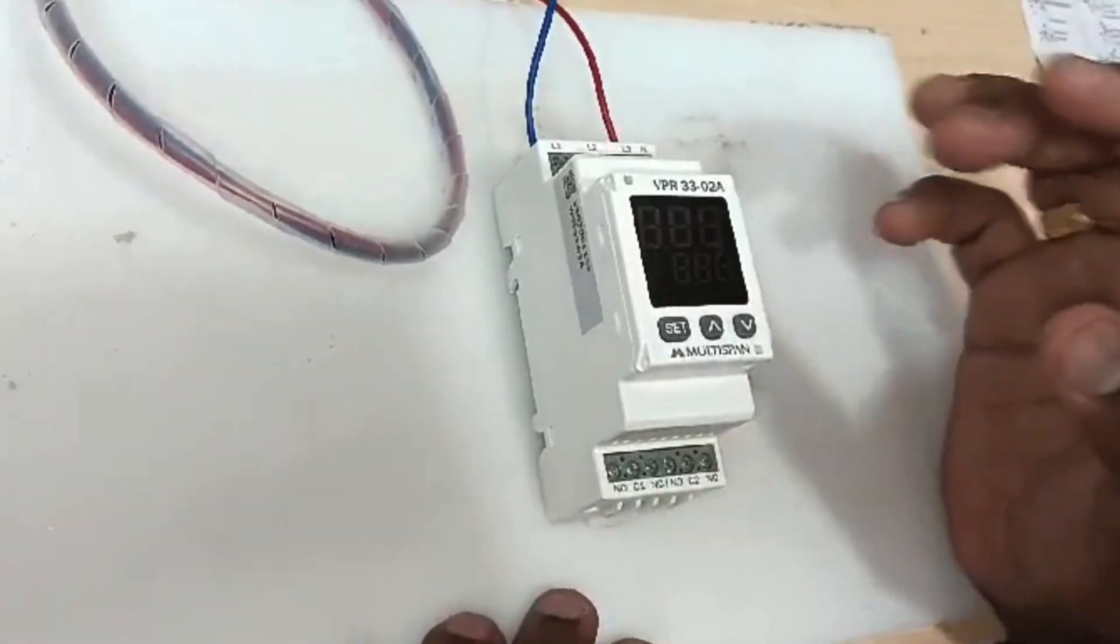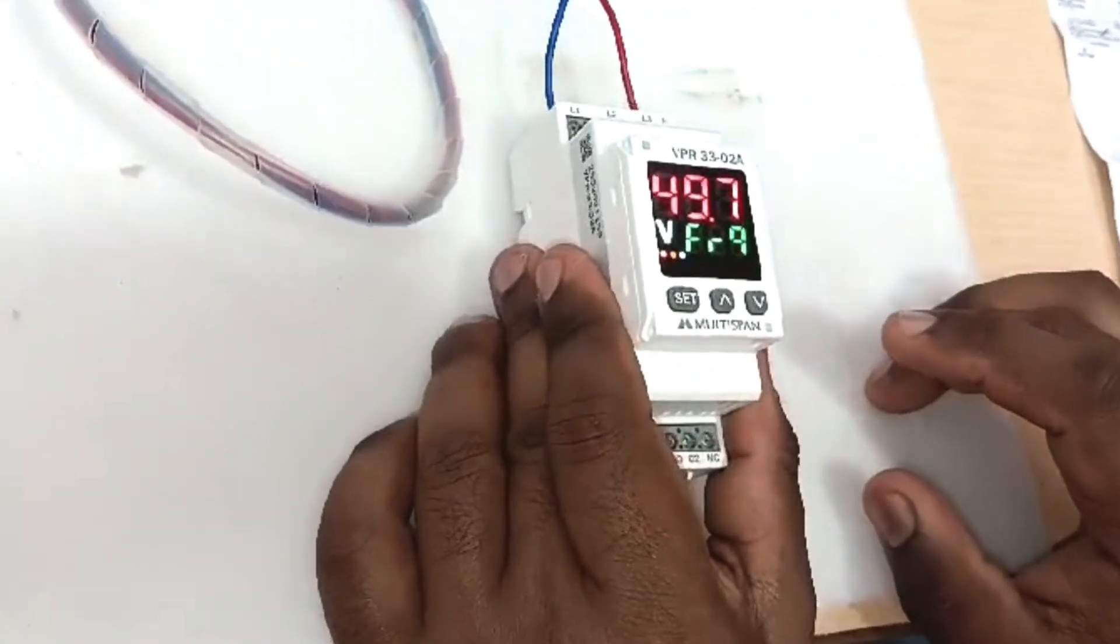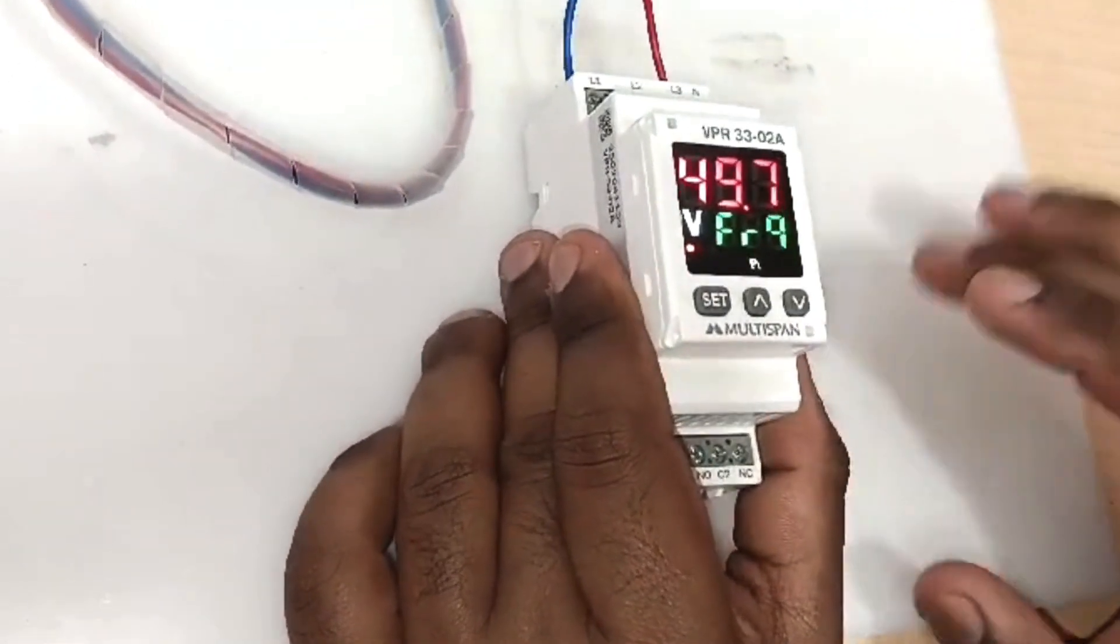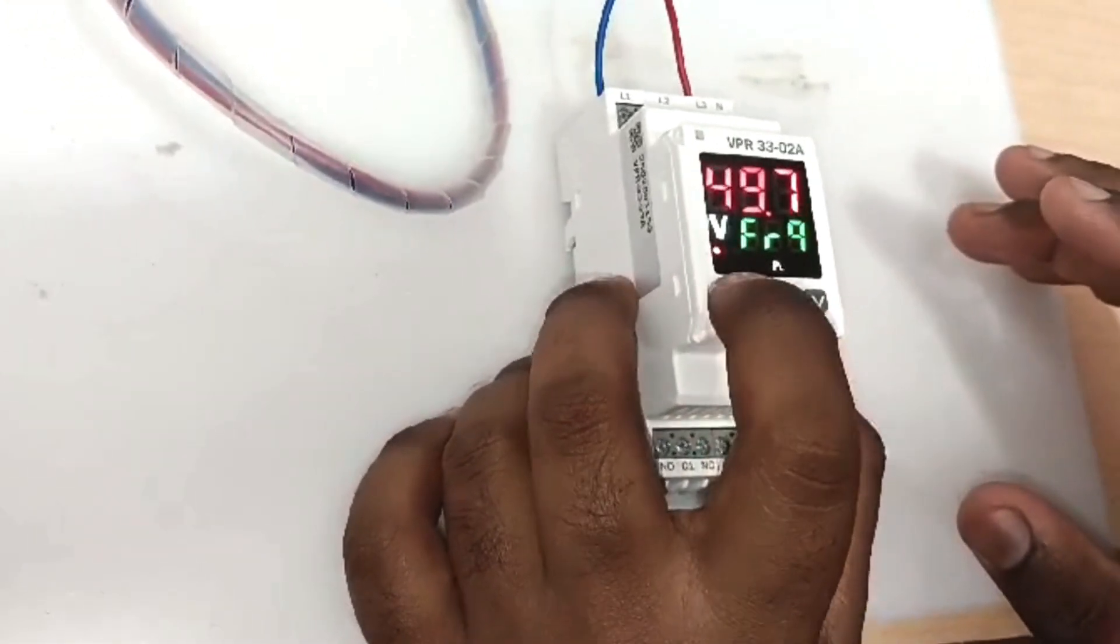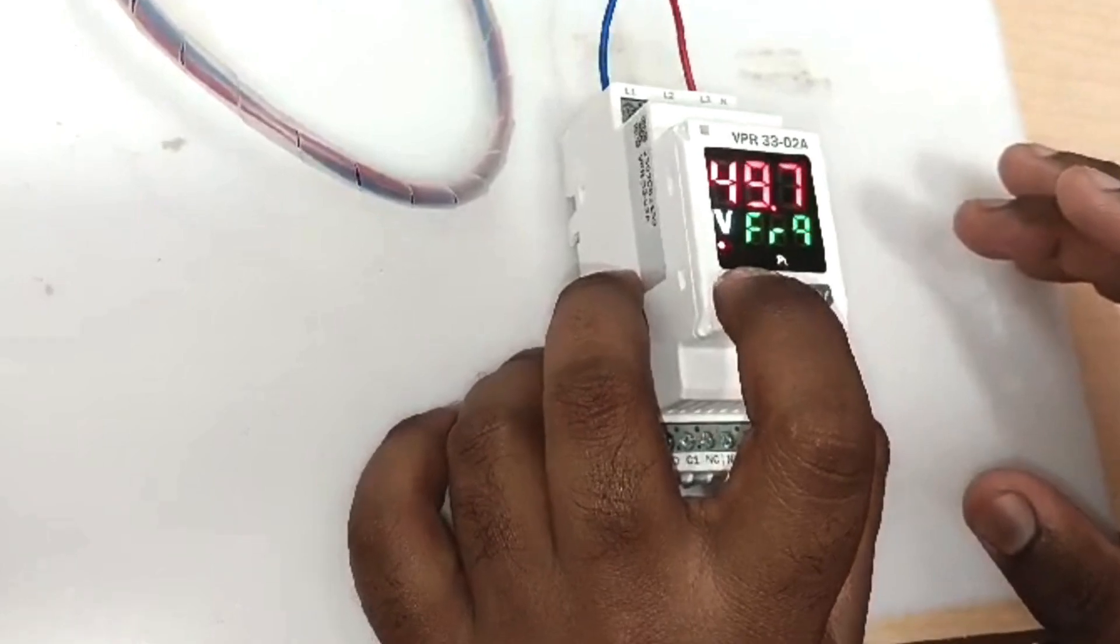Now I'm going to power it on and we will see the settings. Here you can see the frequency which is 45.7. For setting you have to press set button.